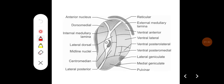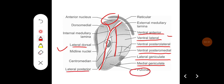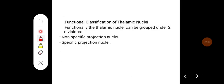In summary, the thalamus is divided into three groups by interlaminar fibers: anterior, medial, and lateral. The lateral part is further divided into ventral and dorsal groups. The ventral group is subdivided into ventral anterior, ventral lateral, ventral posterior lateral, ventral posterior medial, lateral geniculate body, and medial geniculate body. The dorsal group contains lateral dorsal, lateral posterior, and pulvinar. The medial group constitutes the dorsal medial nucleus, midline nucleus, and centromedian nucleus.